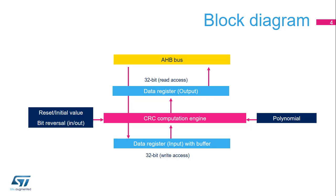It contains a single 32-bit register, which is used for both writing and reading by either the CPU or DMA controller. The initial value, input-output bit reversal, and polynomial coefficients are configured by the software during the initialization phase before starting a new CRC calculation. The CRC computation engine will hold the result of any previous CRC calculation, which then becomes the initial value for the next calculation, thus allowing a new CRC computation of a data block.